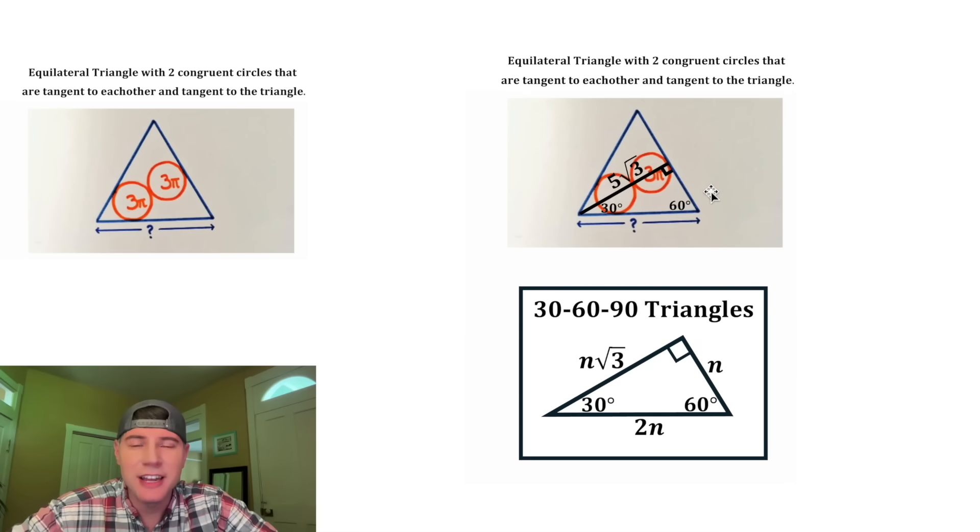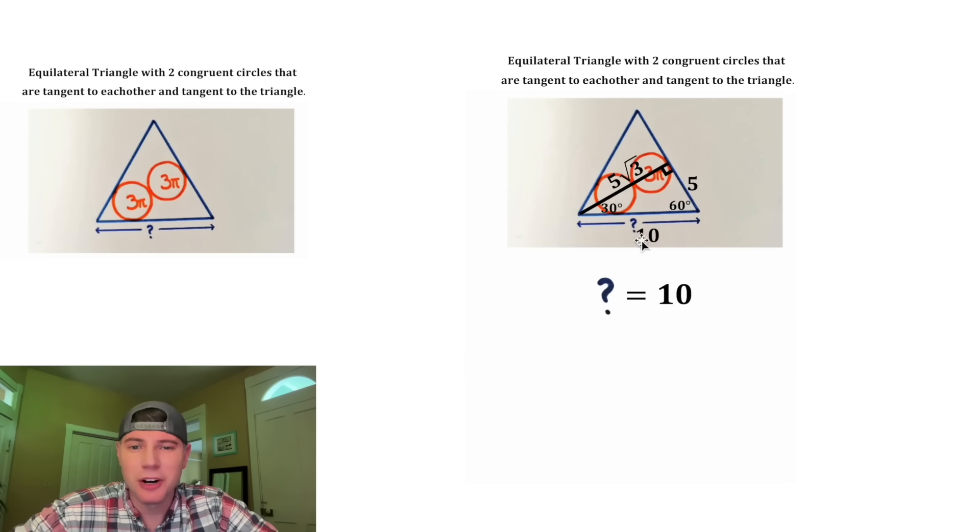So for this case right here, n is equal to 5. This side is 5 root 3, this side is 5, and this side is going to be 2 times 5, which is 10. And this is the side we wanted. The question mark is equal to 10. This is the answer to our question. Let's put a box around it.